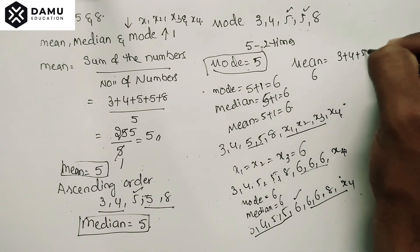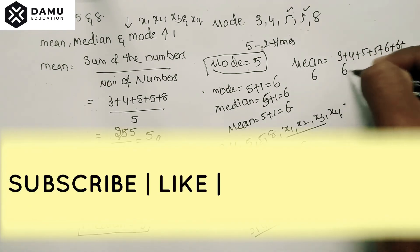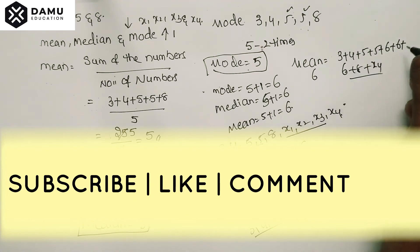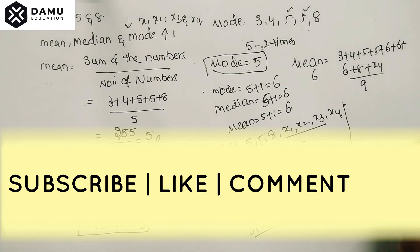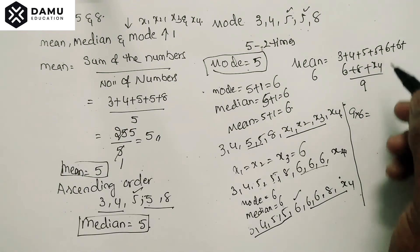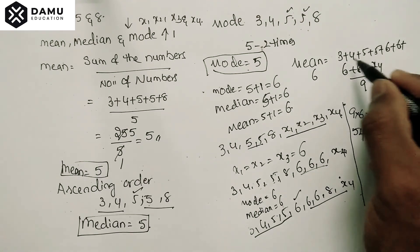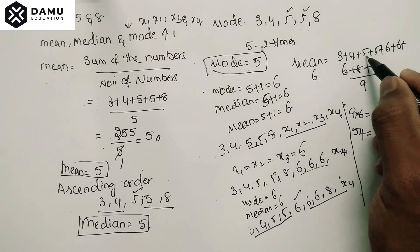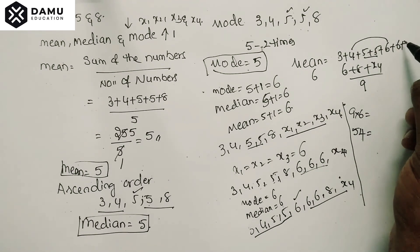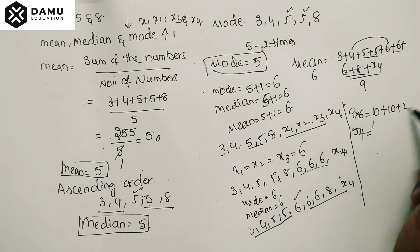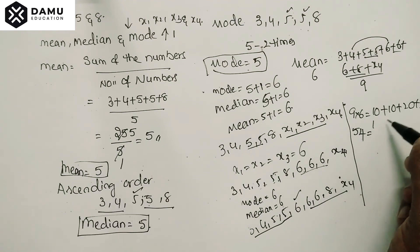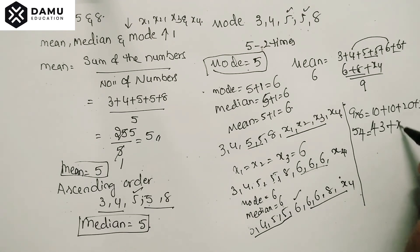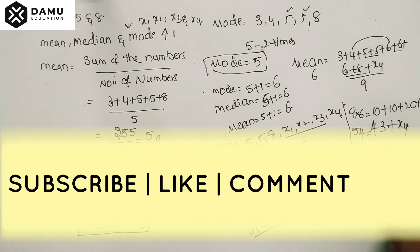The mean equals six, and there are nine numbers, so nine times six equals fifty-four, which must equal the sum of all values. Adding the known numbers: three plus four plus five plus five plus six plus six plus six plus eight plus x4. The sum of the known values is forty-three plus x4.